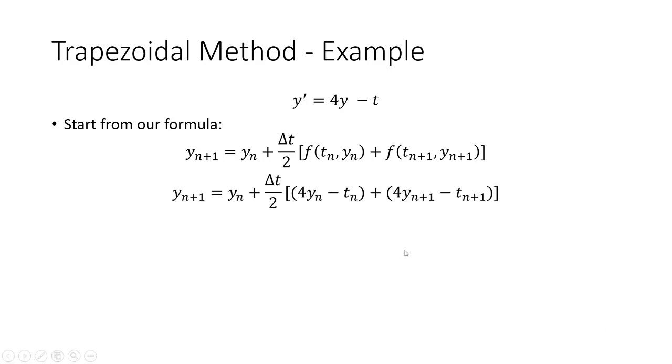So when we plug in our function, t sub n and y sub n, we get 4 times y sub n minus t sub n. And then we also have this plus 4y sub n plus 1 minus t sub n plus 1. So in order to get an explicit formula, we need to get this y sub n plus 1 term over to the left side. That's the goal here.